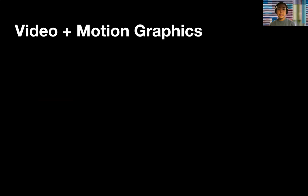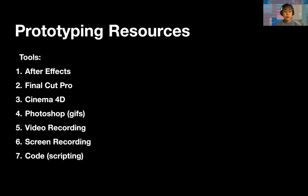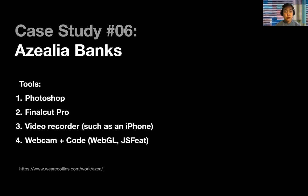Next, we're going to talk about how to document video and motion graphics. Prototyping resources include After Effects, Final Cut Pro, Cinema 4D, Photoshop for GIFs and color correction, video recording, screen recording, and code if you want to script animation. One note: motion graphics usually are part of another project — for example, animations that exist on a website, a storytelling platform, or as part of an identity campaign. The first case study is a project by Collins for artist Azealia Banks, for her music video Wallace. Tools used: Photoshop, Final Cut Pro, a video recorder such as an iPhone, and webcam plus code — in this case WebGL and JS.